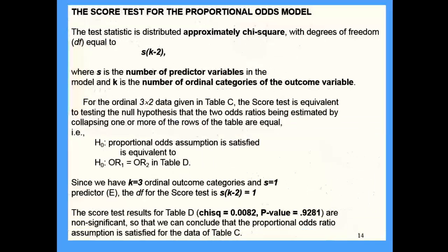Let me illustrate with a hypothetical example. Here's a different table with 275 people total. If I split it the same way - combining 30 and 20 to get 50, 30 and 70 to get 100 - and compute the two odds ratios, they're very close: 2.00 and 2.06. This is the kind of situation where you'd expect the proportional odds assumption to be satisfied.